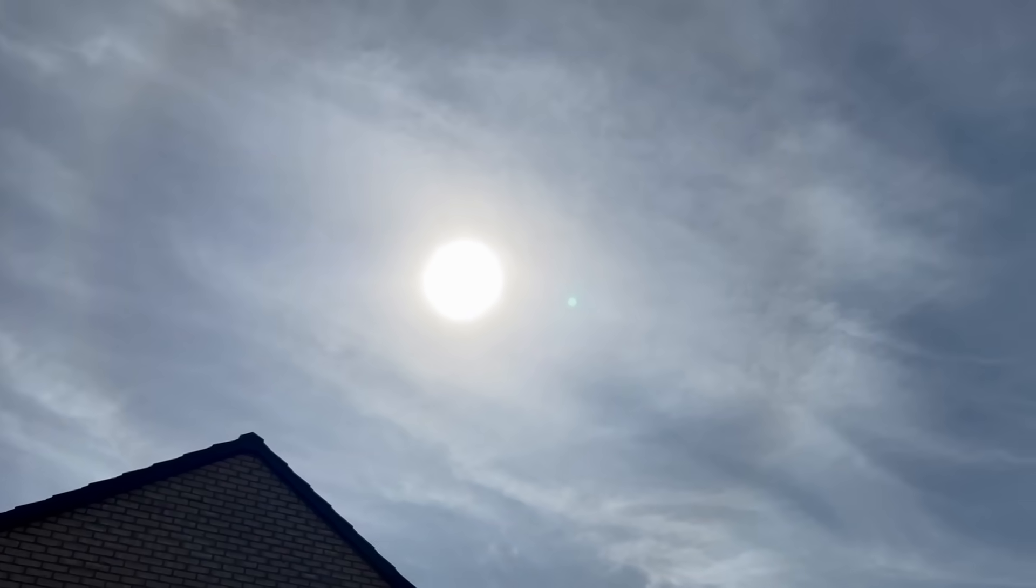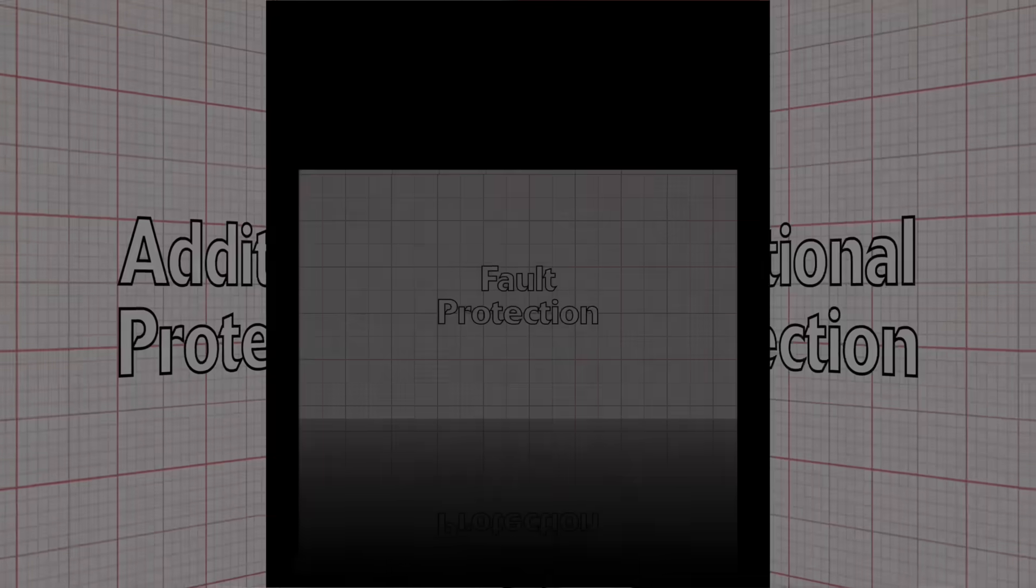If you're already watching it as part of that training package then the sun will seem dim next to the brightness of your intelligence. Now back to basics. To protect people and property from the dangers of electricity we have different layers of protection.